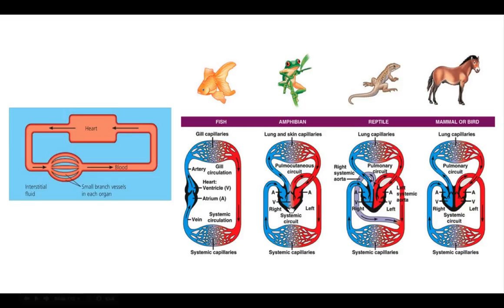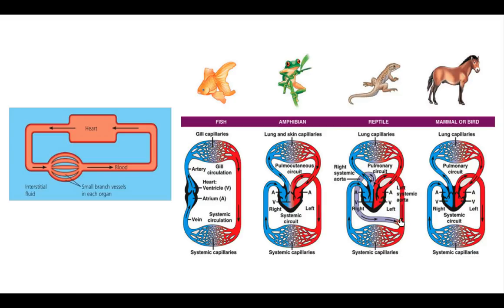The amphibian heart has no division between the left and right sides — two atria but only one ventricle — causing significant mixing of blood, so much deoxygenated blood recirculates throughout the body without delivering much to the cells. Fish have the simplest circulatory system: just one atrium and one ventricle, with no separation of oxygenated and deoxygenated blood in the heart. As organisms become more complex, their circulatory systems become more efficient at delivering oxygenated blood for respiration.